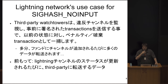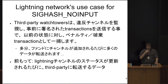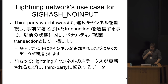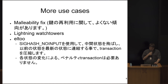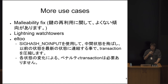SighashNoInput has received recent attention because the Lightning network developers would like to use it for something called watchtowers. There is either a Lightning talk today or tomorrow that will make this make more sense. Essentially, you want to be able to broadcast certain transactions to enforce the rules of the Lightning protocol. There's also another Lightning network proposal called L2, which is very confusing because the Lightning network is already considered Layer 2 — I think it was supposed to be a pun, but it's really just confusing.